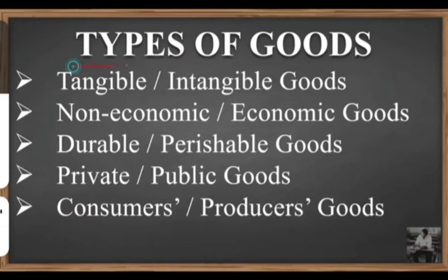Air and sunlight are non-economic goods — unlimited sources for which we pay no price. Economic goods, on the other hand, are commodities or services which have controlled supply; demand is more and supply is less. Purchase and sale is possible, so they are termed economic goods. Goods which command an exchange value in the market are called economic goods. We pay a price to obtain them, and the raw material is scarce.